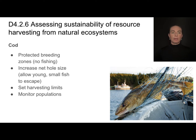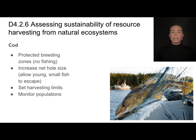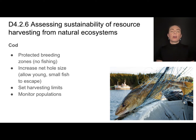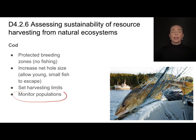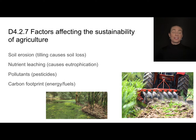Some strategies that have been effective include protecting breeding zones — so no fishing where they are reproducing — and increasing the net hole size. If you want to catch cod using a net, you want the holes to be big enough so that smaller, juvenile cod can escape. That way you're leaving individuals that can survive, reproduce, and replenish the population. Setting harvesting limits and monitoring populations are also important, as monitoring can inform what the harvesting limit should be next time.